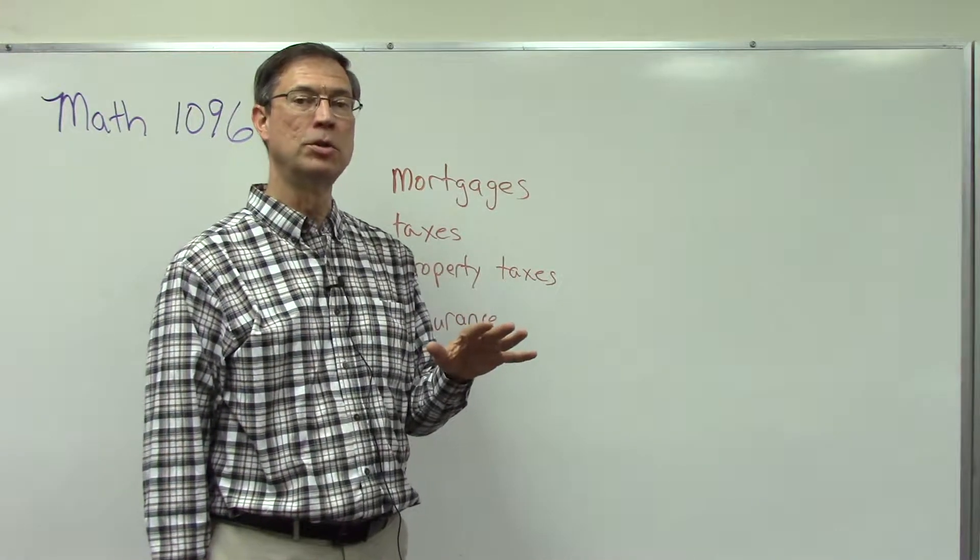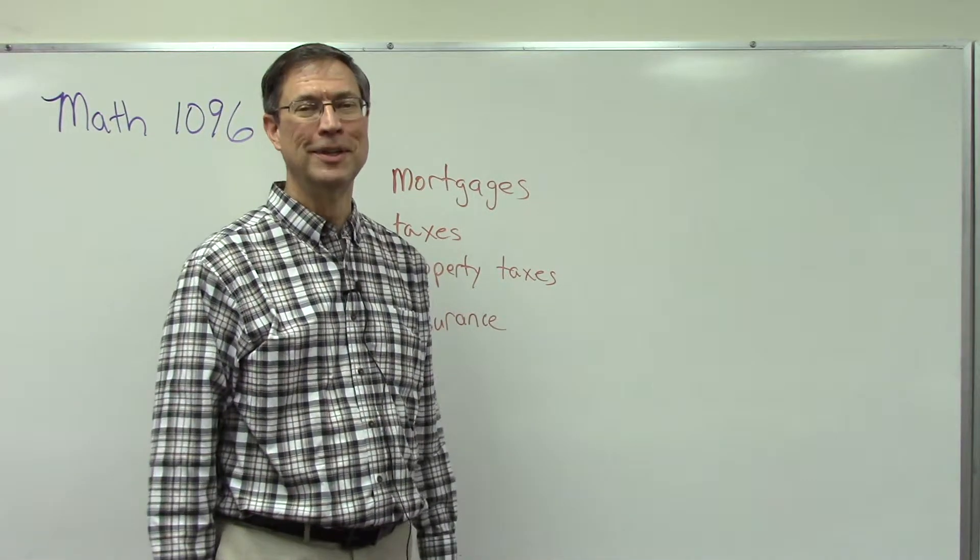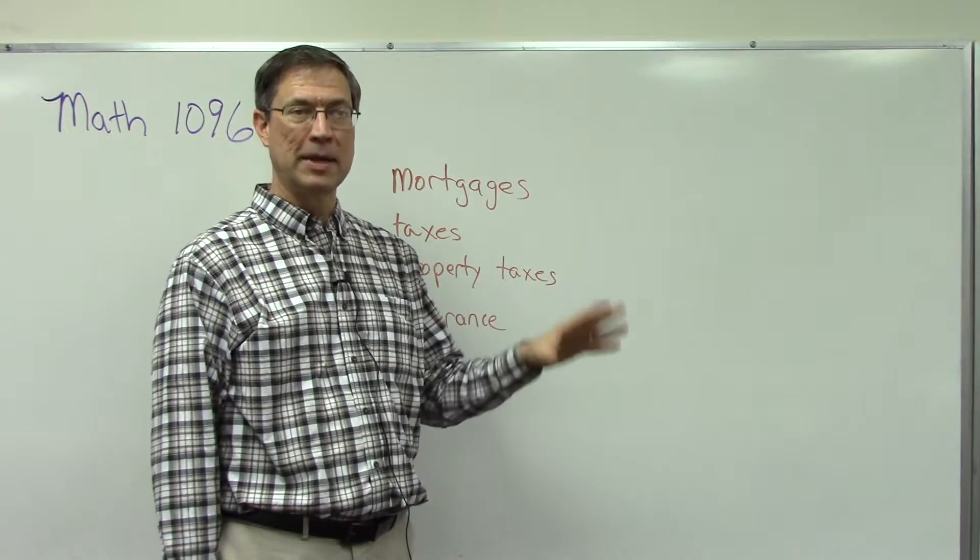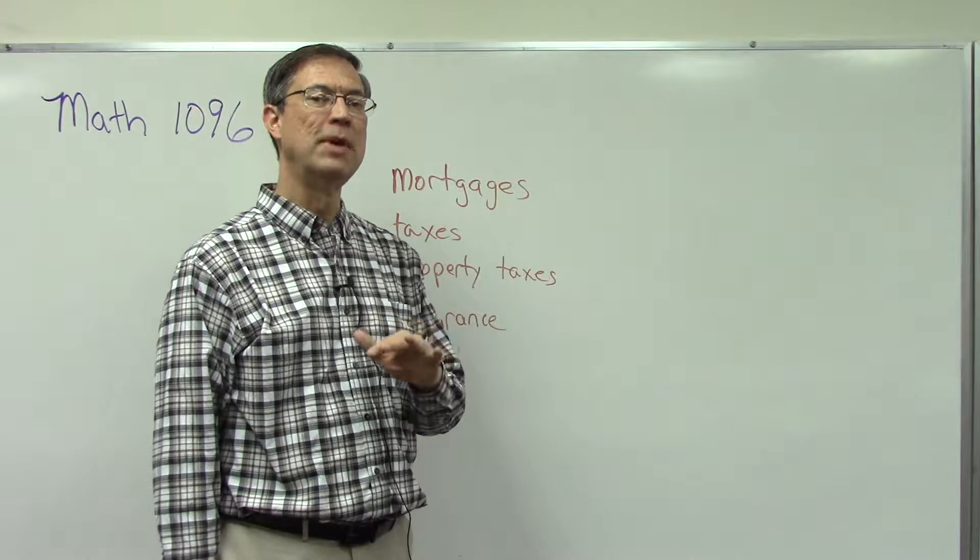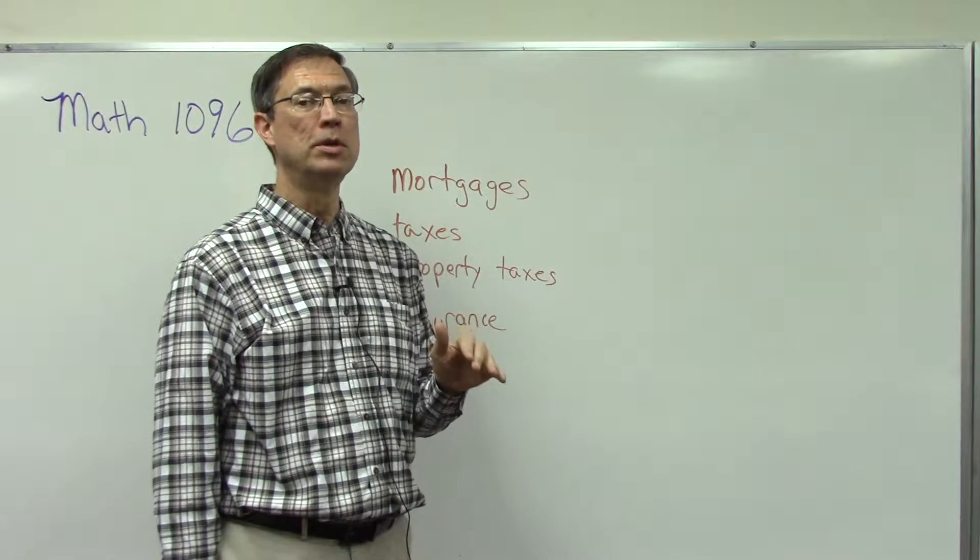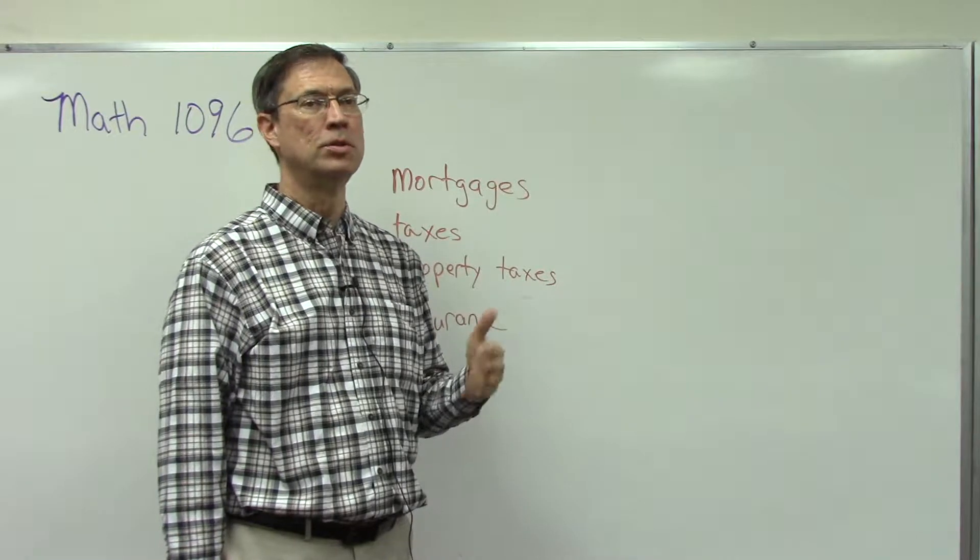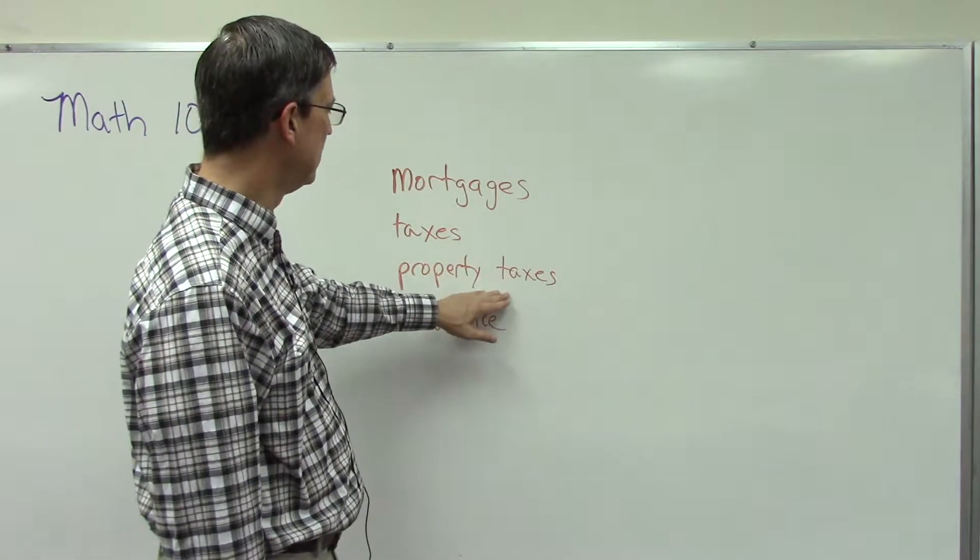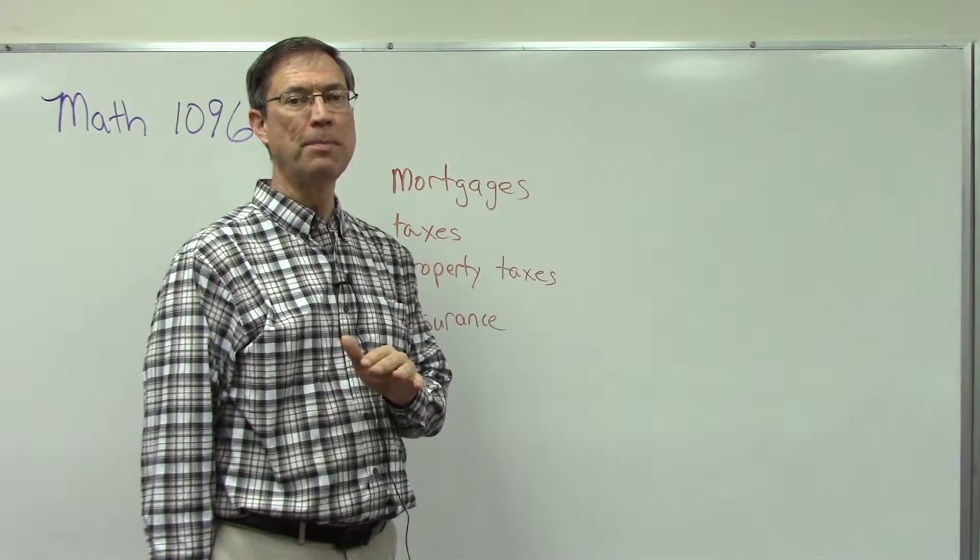So what happens is every 10 years or so an assessor comes around and looks at the property and says, 'I think your property is valued at, let's say, $200,000.' Then they take the tax rate for that county or township or city and multiply that times the value of the property. Every year the homeowner has to pay those taxes to the township or the county or whatever the government is.